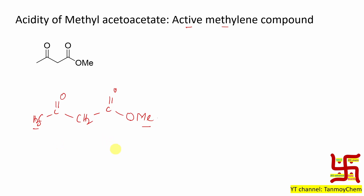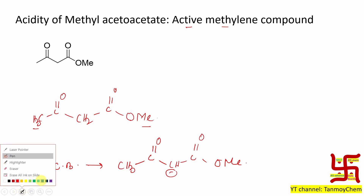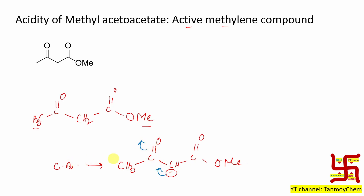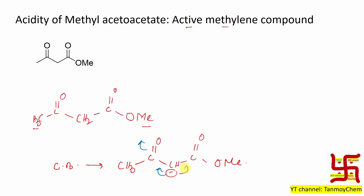Because whenever we talk about the acidity of a molecule, we need to check the stability of the conjugate base. The rule is: higher the stability of conjugate base, higher is the acidity. So this is my conjugate base — the proton-removed form. This conjugate base has two stabilizations: one resonance with the keto carbonyl group, and another resonance involving the ester carbonyl. So two canonical forms are possible.